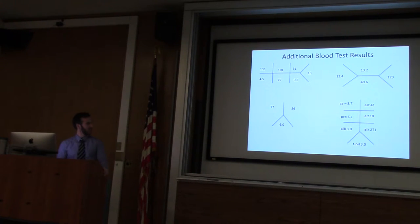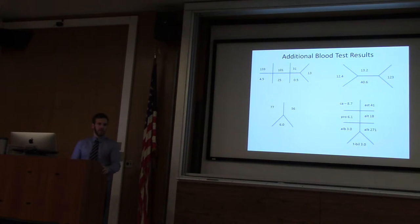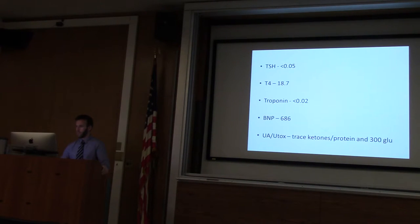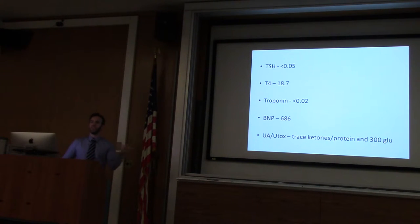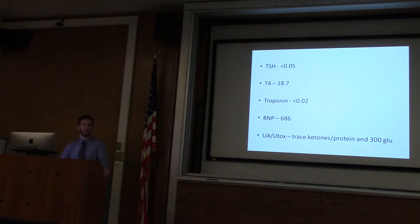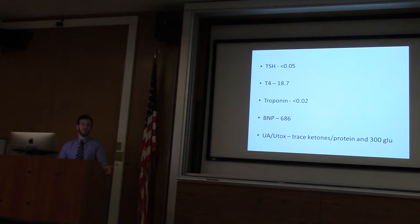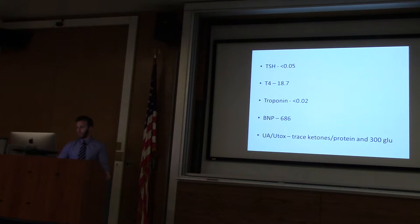There's an INR of 6 in this patient. T-bili is 3. The BUN-to-creatinine ratio is a little off. TSH and T4: we're in our endocrine block — this is signs of hyperthyroid. Troponin is negative, so less likely myocarditis. BNP is 686 — along with the B-lines, definitely shows signs of heart failure. Urine tox: nothing remarkable.